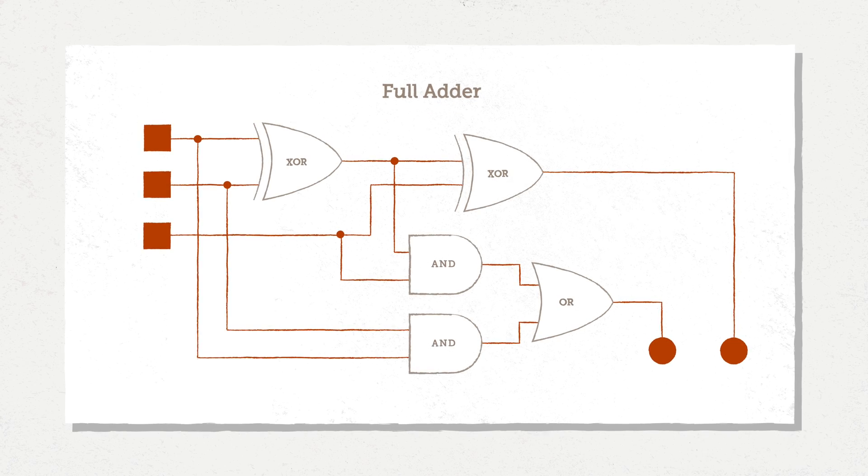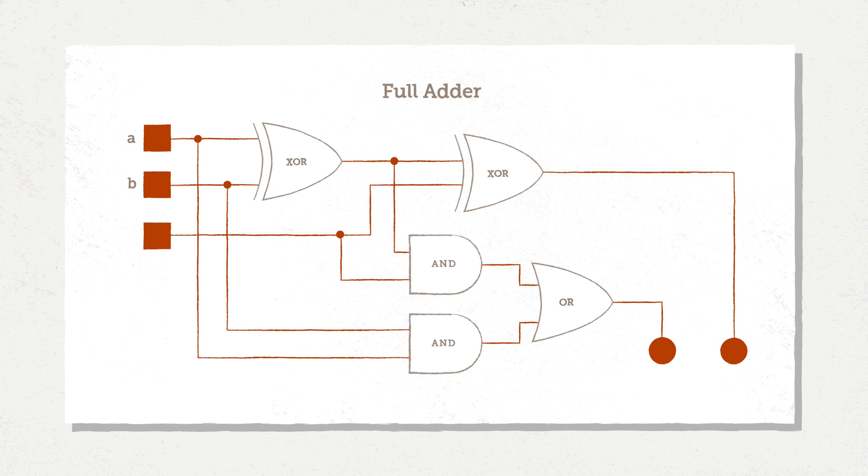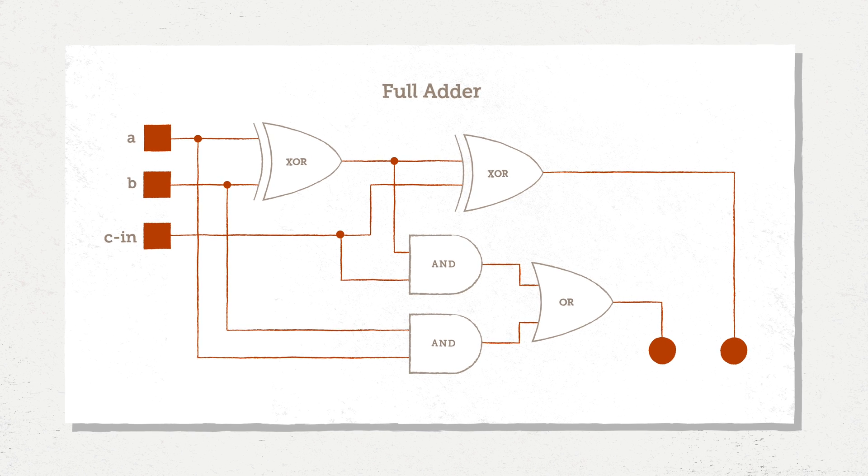Now that we have digital logic and this concept of binary addition with carrying, can we build a circuit to implement this carrying using digital logic? We can, and it's called the full adder, shown here. It has three inputs and two outputs. The inputs are A and B like before, and an additional carry-in that tells us what the carry is from the previous stage of addition.